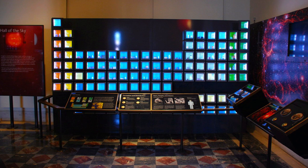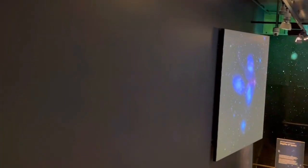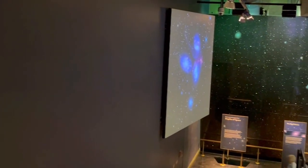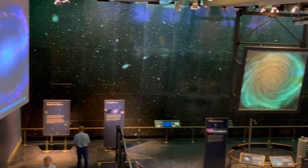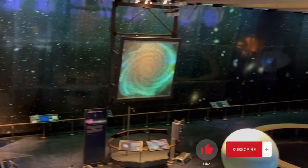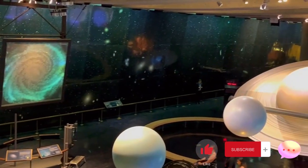And that wraps up our journey through the second room at Griffith Observatory. Join us in part three as we delve into the Zeiss telescope and explore the lower level of the observatory. Until then, be sure to like, subscribe, and leave a comment telling us where you'd like to explore next.